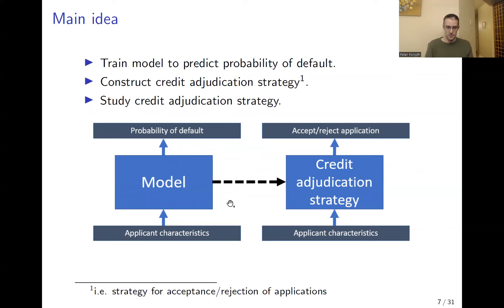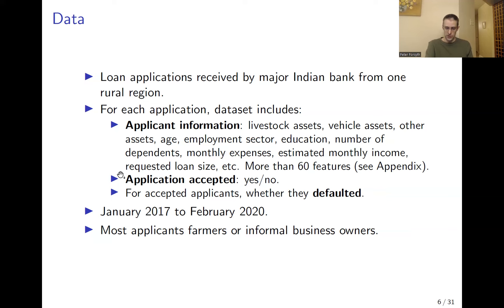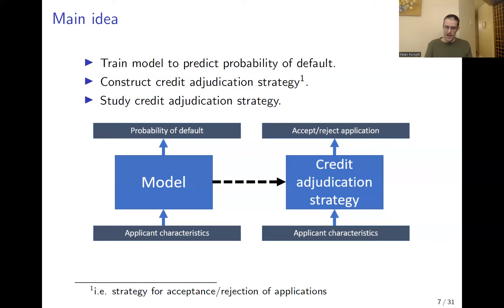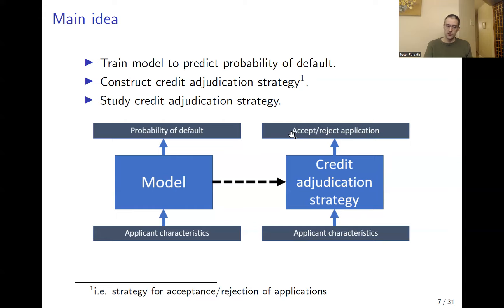The main idea of the paper is as follows. The author wants to train a model on this dataset to predict, for a given applicant, the probability that they will default on their loan. The result is an ML model that takes applicant characteristics and outputs a probability of default. Then the author wants to construct a credit adjudication strategy from this model — a strategy that takes in applicant characteristics and outputs a decision to accept or reject, typically by choosing a threshold on the probability of default.